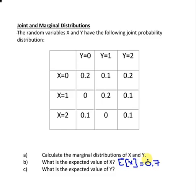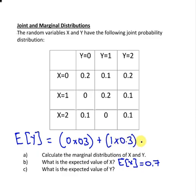And we're going to do the same thing for Y now. So the expected value of Y is 0 times 0.3, plus 1 times 0.3, plus 2 times 0.4. And that adds up to 1.1. So the expected value of Y equals 1.1.